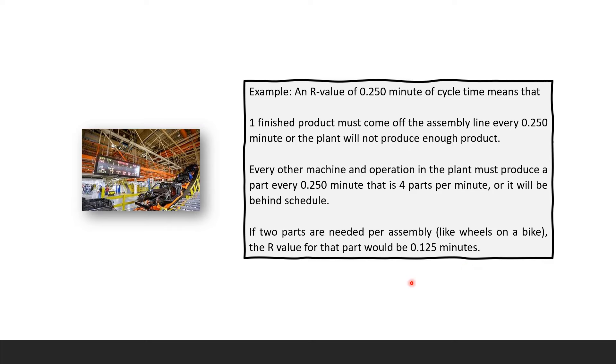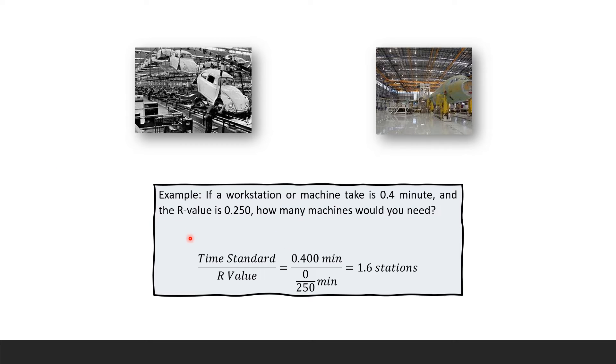You have to study in order to know what R-value is and what workstation is. Here in this example, the machine at the workstation with or without you is 0.4 minute, and your R-value is 0.4 minute. Your standard time is 0.250. You divide your standard by R-value.